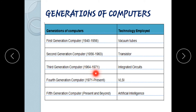The third generation computer spans 1963 to 1971, and used integrated circuits.